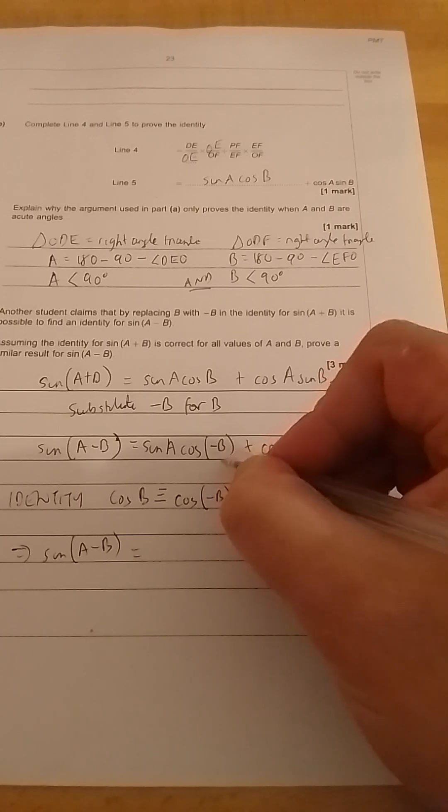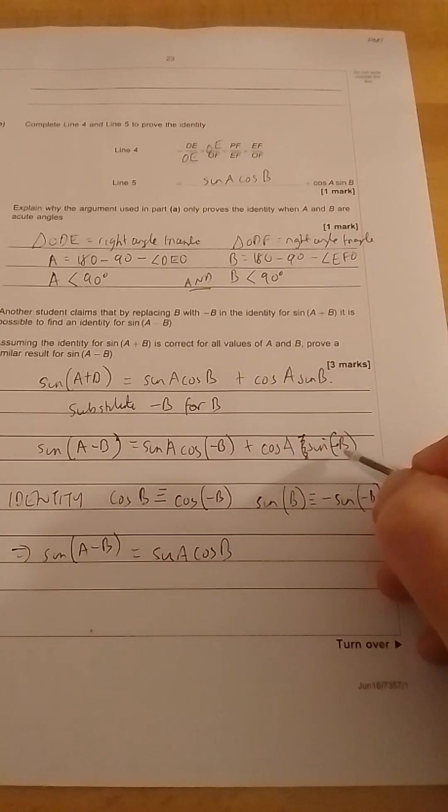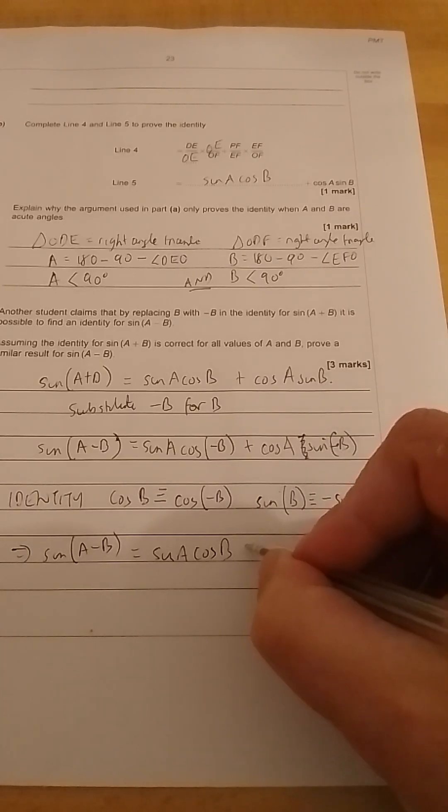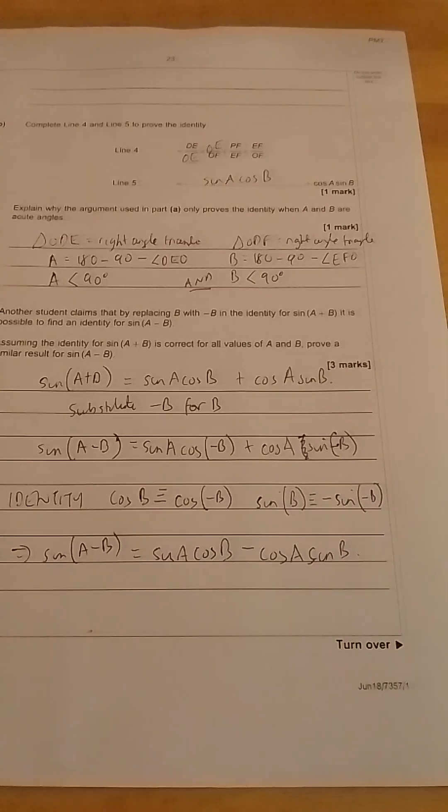Cos(-B) becomes just cos B. So sin A cos B. And because of the minus B inside the sine here, it becomes minus sin B. So it will become minus cos A sin B. And we've proven the result we wanted.